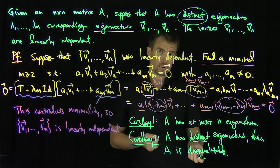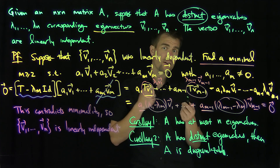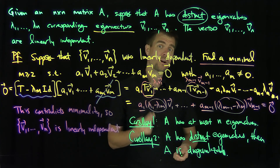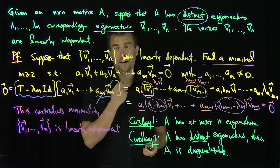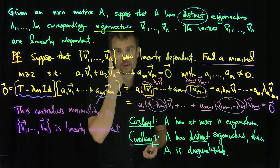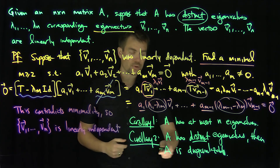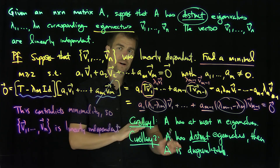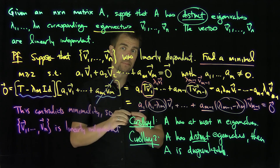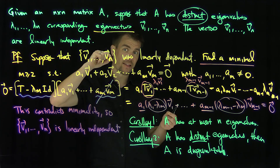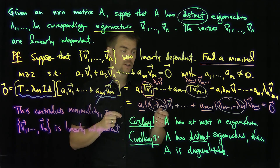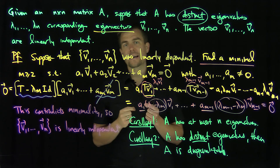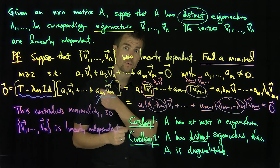The converse of this corollary is not true. For example, the identity matrix is certainly diagonalizable, but it has only one eigenvalue — eigenvalue one. So the converse is false because diagonal matrices can have a repeated eigenvalue. If you have distinct eigenvalues, you are automatically diagonalizable, but the converse does not hold.